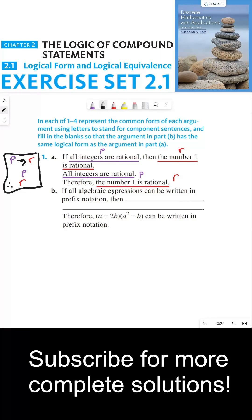For part b, it says 'if all algebraic expressions can be written in prefix notation...' Now you don't even need to know what prefix notation is. You don't need to know whether or not the statement is true or false, because it's not the content that we're looking at in this problem—it's the logical form.